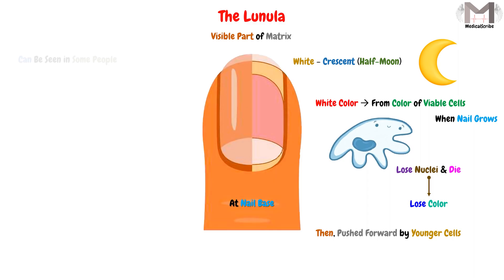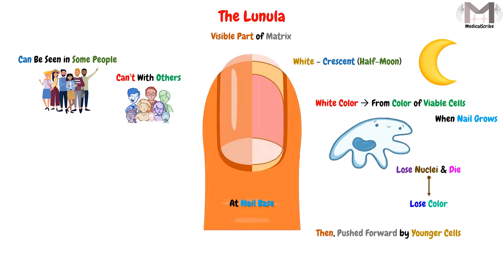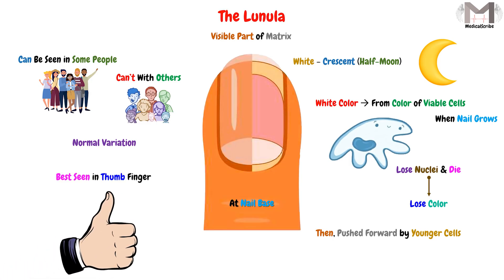The lunula can be seen in some people but not others, and this is a normal variation. The best place to see the lunula is on the thumb finger. That was everything about the lunula. We also talked about the nail bed with its two regions, the germinal matrix and the sterile matrix. I hope what I said makes sense. See you in the next video, goodbye.